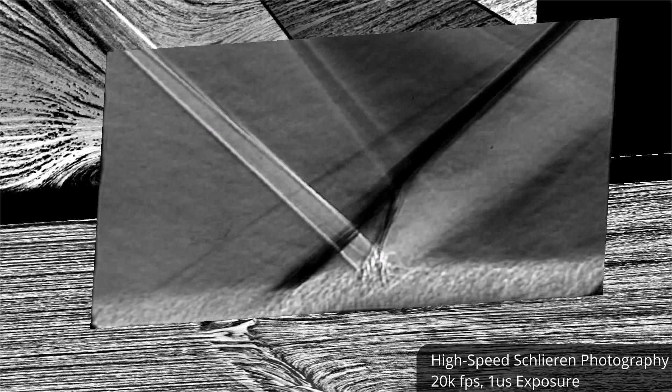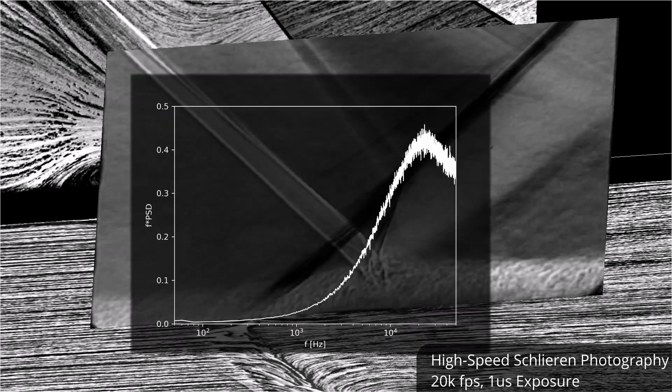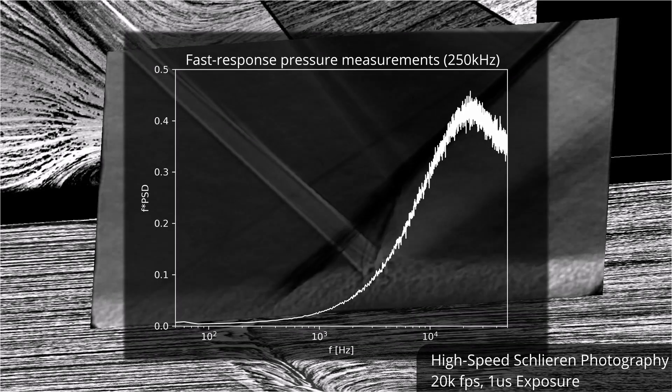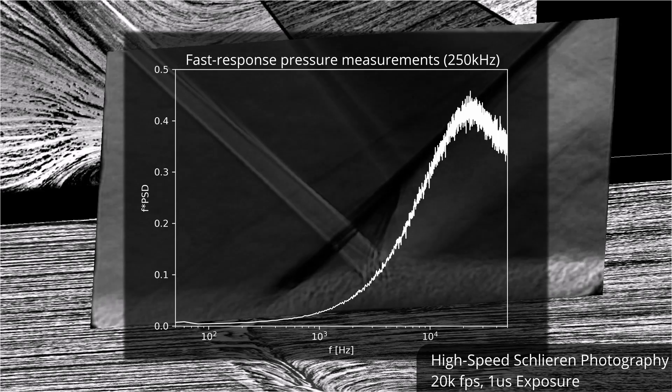Upstream of the interaction, the supersonic turbulent boundary layer has a very high frequency signature with small-scale structures corresponding to frequencies way above 50 kHz.